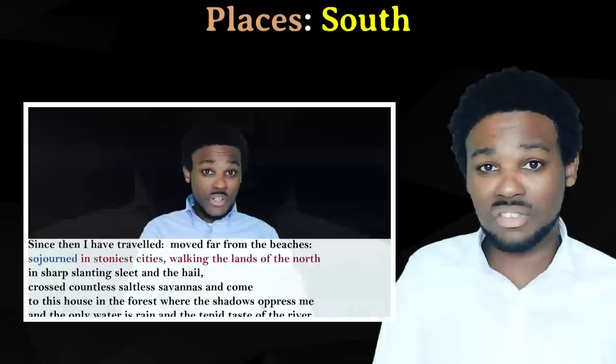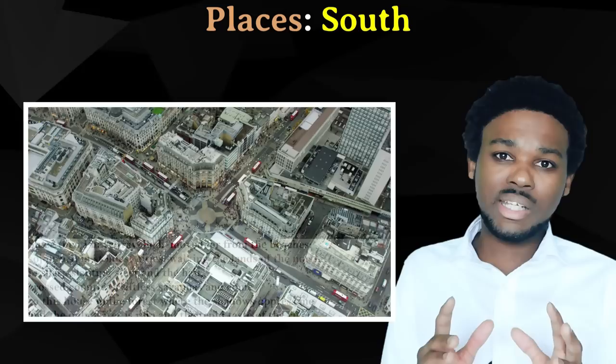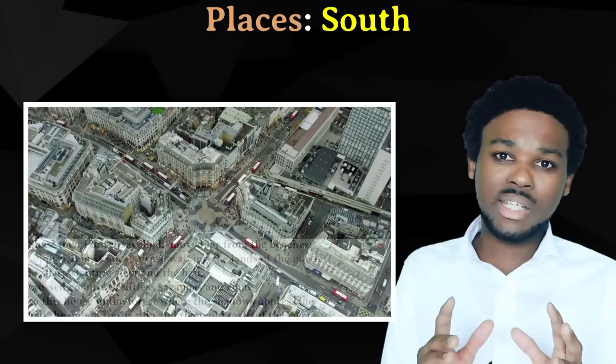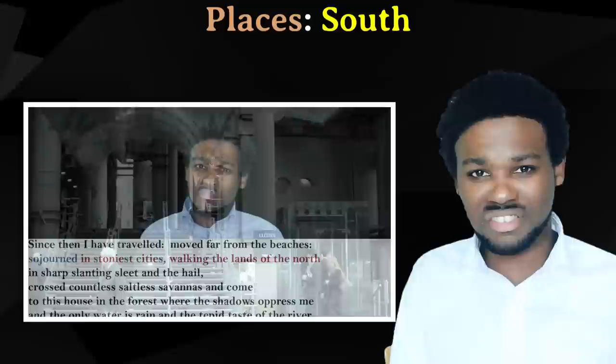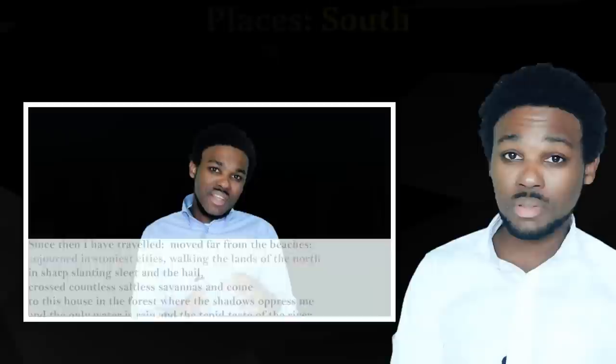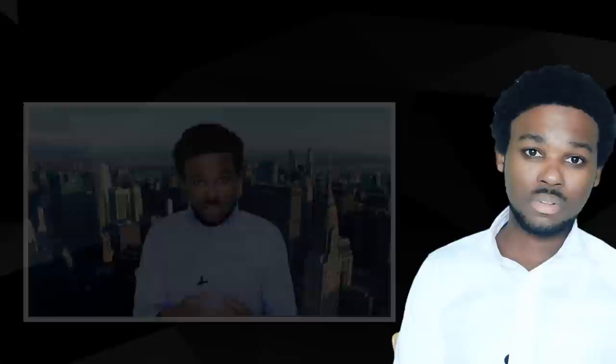A similar poem is South, wherein the Caribbean or the West Indies is compared to the North, which might be the big first-world countries of the West — England, Canada, and other places in Europe. Throughout the poem, we're taken on a journey through places. We start in the Caribbean with the bright blue beaches, then journey up north and reach the saltless cities and countless savannas. Finally, we return home to the Caribbean. The places in the poem actually represent the people of those places.